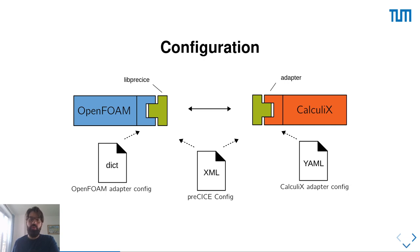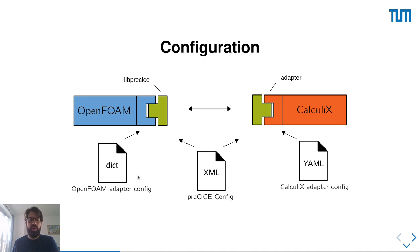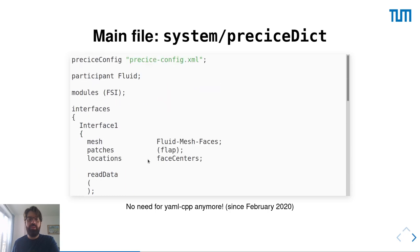How do we configure this? You have already seen the XML preCICE configuration file. For every adapter, we also have an additional configuration file which essentially tells how the meshes of preCICE relate to the patches of the solver, plus a few more technical details. In the case of Calculix, this is a YAML file. For the OpenFOAM adapter, this also used to be a YAML file in the past, but now it is an OpenFOAM dictionary, similar to the rest of the configuration files of OpenFOAM you already know.